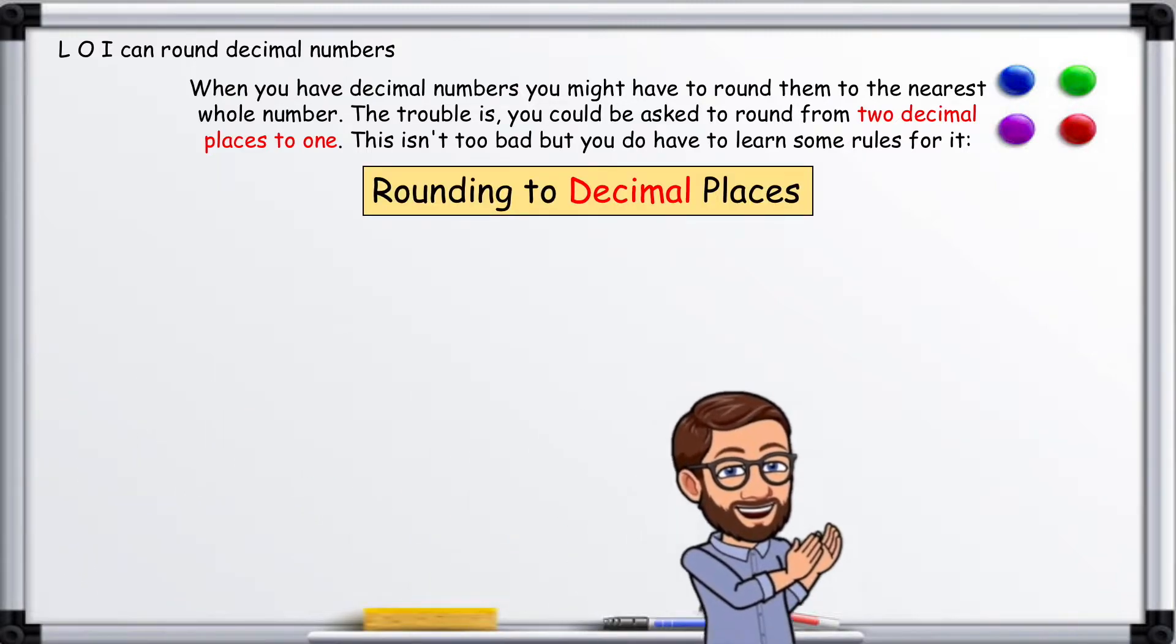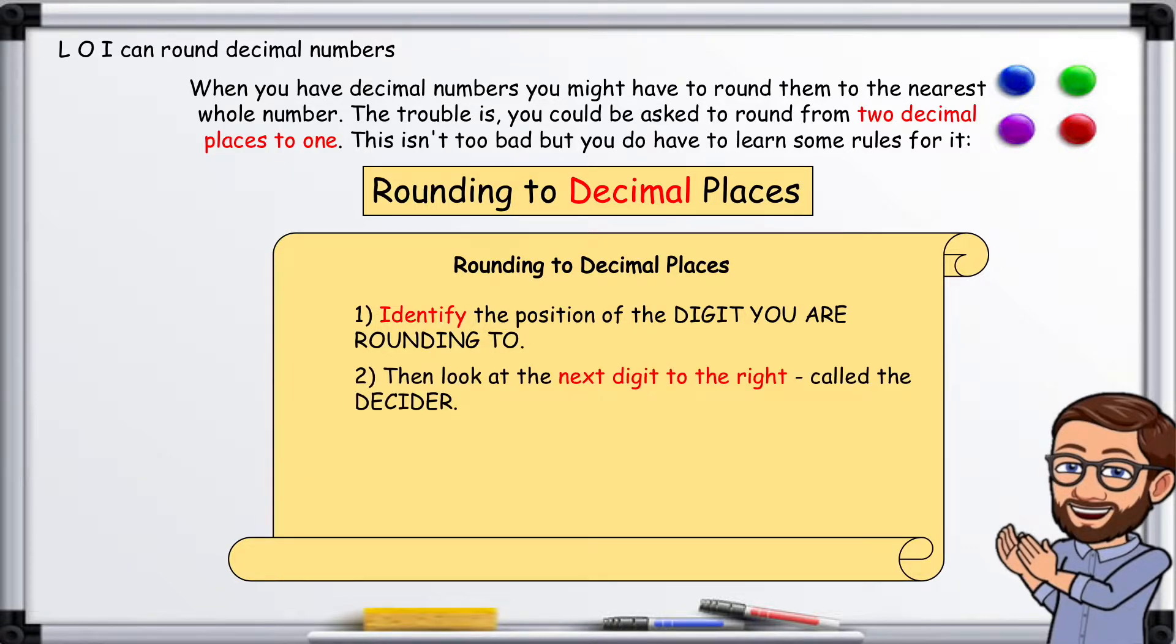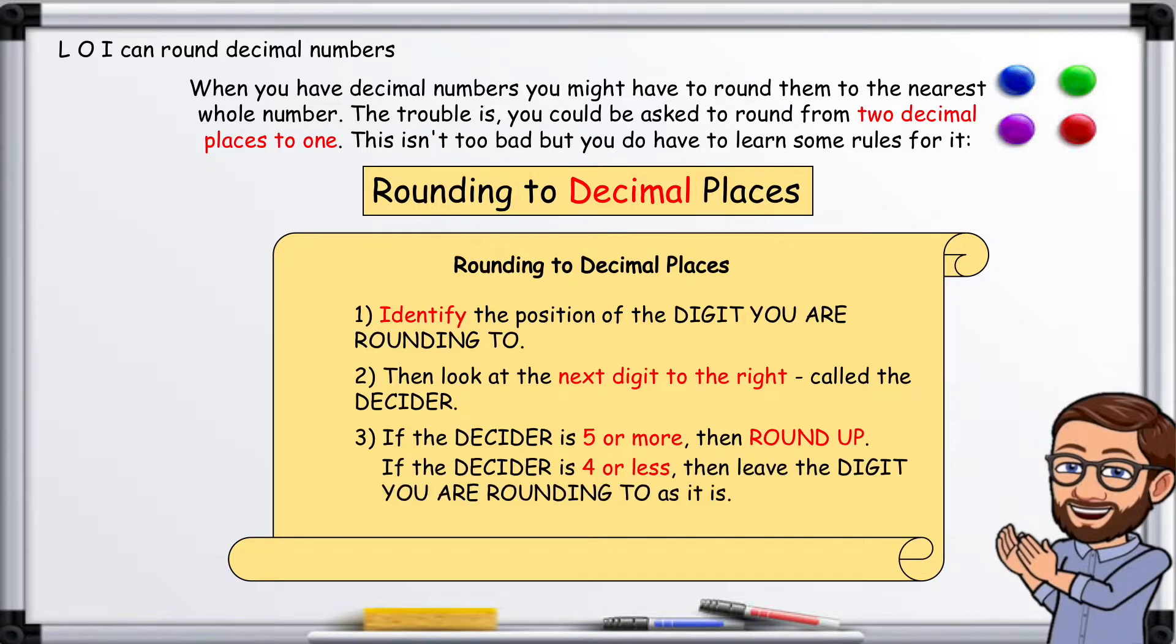Rounding to decimal places. 1. Identify the position of the digit you are rounding to. 2. Then look at the next digit to the right called the decider. 3. If the decider is five or more then round up. If the decider is four or less then leave the digit you are rounding to as it is.